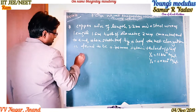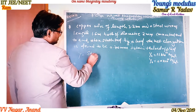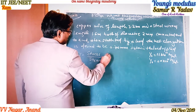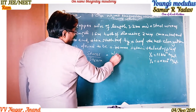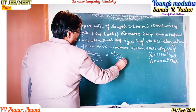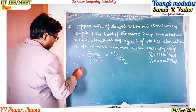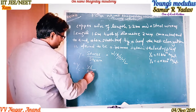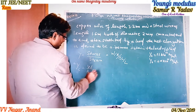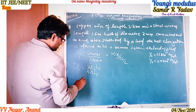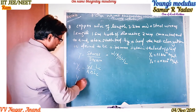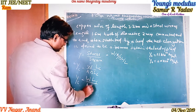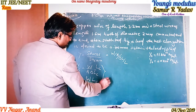We know that Young's modulus Y is equal to stress upon strain, which equals W upon A divided by delta L upon L. In the case of copper, Y_c equals W upon A into delta L_c upon L_c. Similarly for the steel wire, Y_s equals W into L_s upon A into delta L_s. This is equation 1.